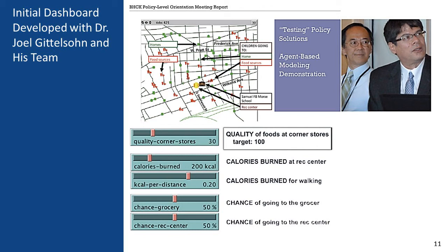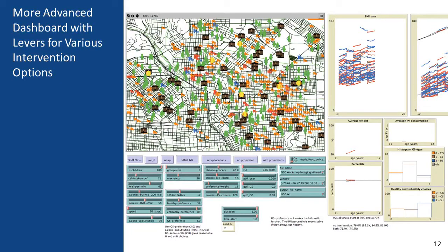These controls can be adjusted from the point of view of an intervention. The top control is most important — if an intervention improves the quality of food at corner stores, we move the slider to the right and see the impact on the simulated children. A more advanced model includes many more sliders and graphs showing BMI trajectories, where the horizontal axis is the age of each child and the vertical axis is BMI. Each line shows one child's trajectory over the years they live in this environment.